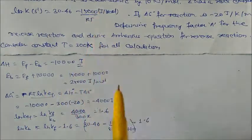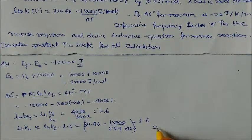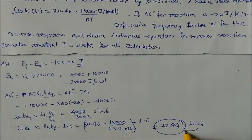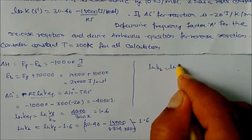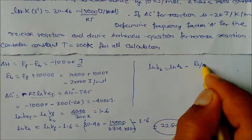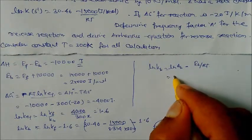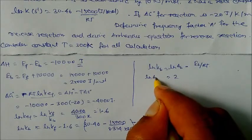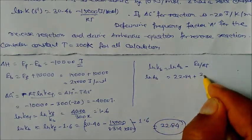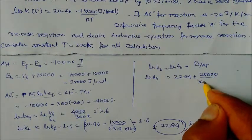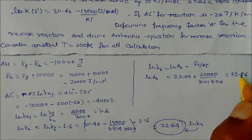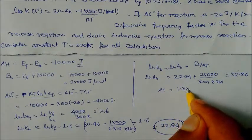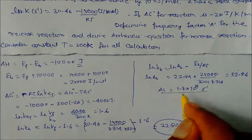On solving, we get ln(kb) = 22.84. Now using ln(kb) = ln(Ab) minus Eb/(RT), we write: ln(Ab) = 22.84 + 25000/(300 × 8.314), which gives ln(Ab) = 32.86. Therefore Ab = 1.8 × 10¹⁴ per second. That is the frequency factor.